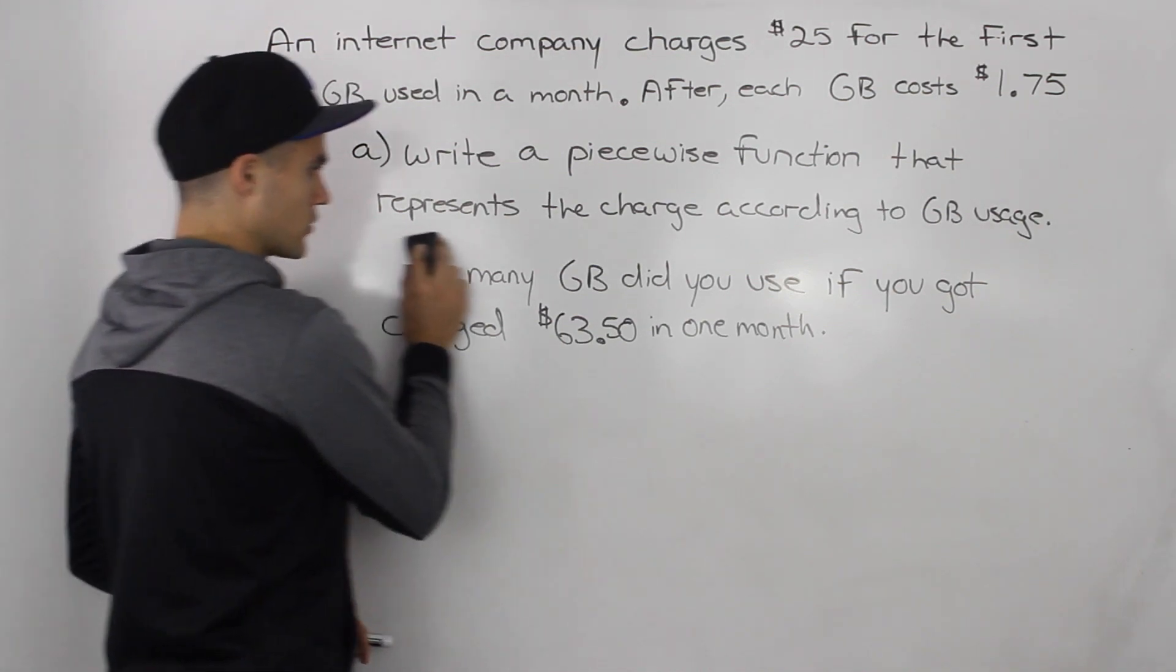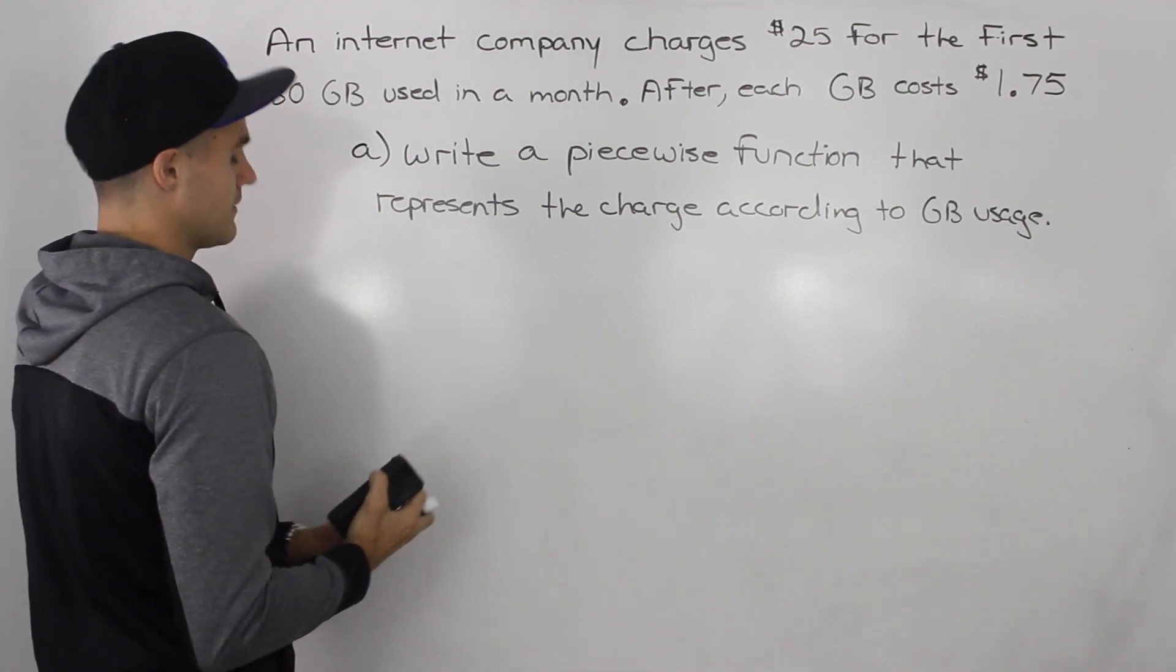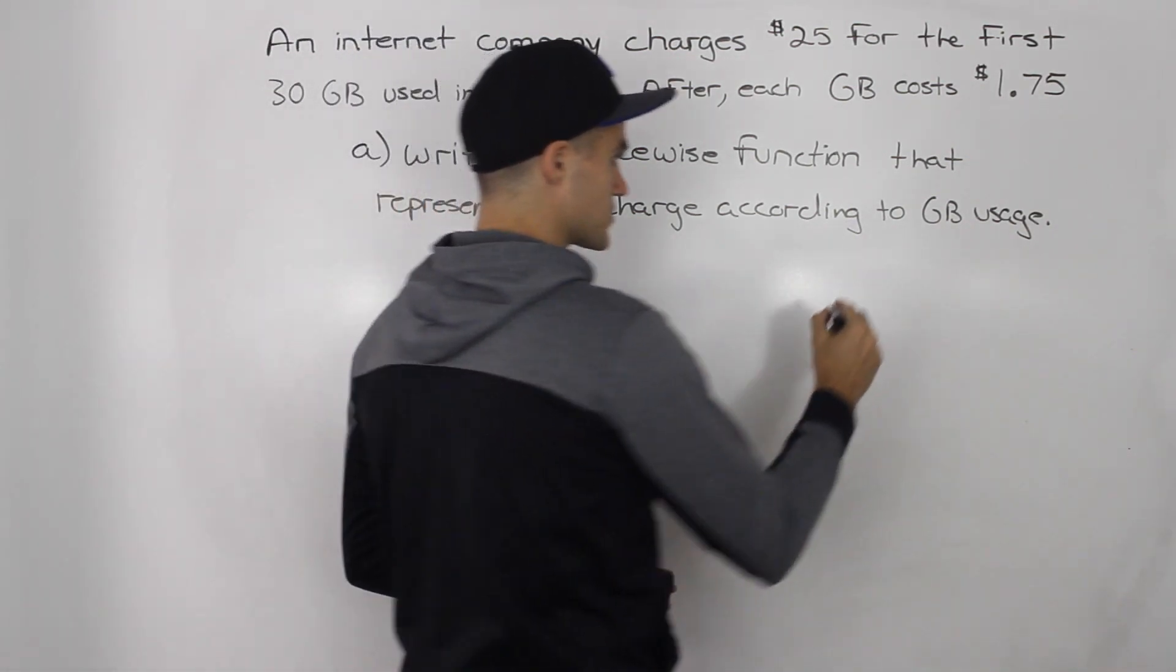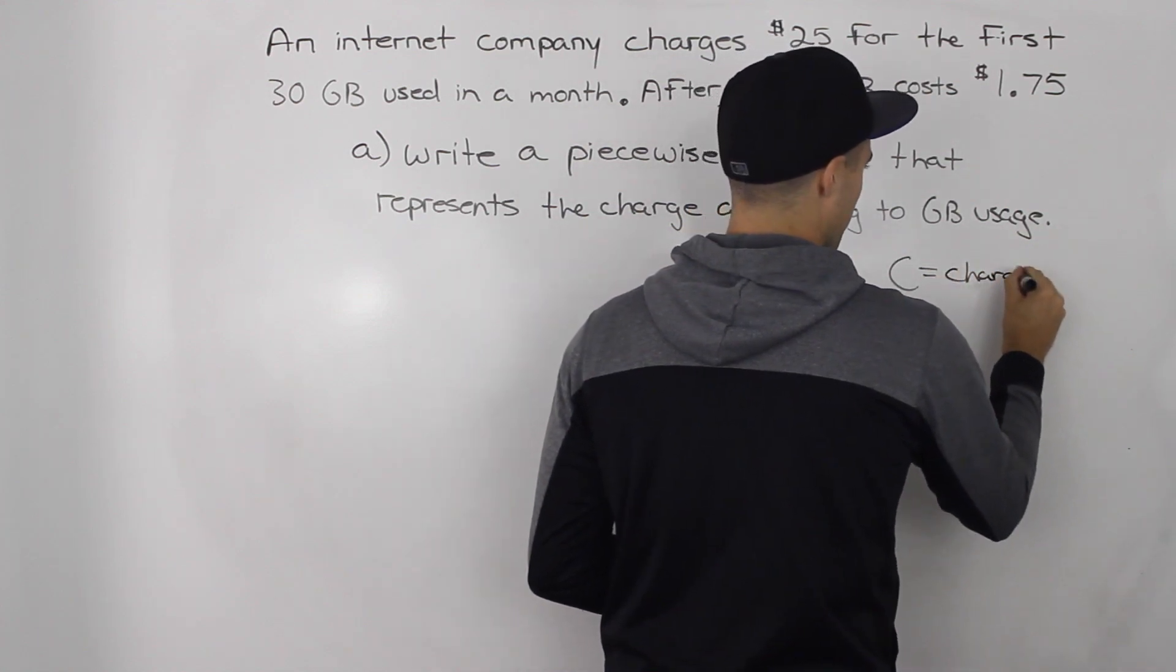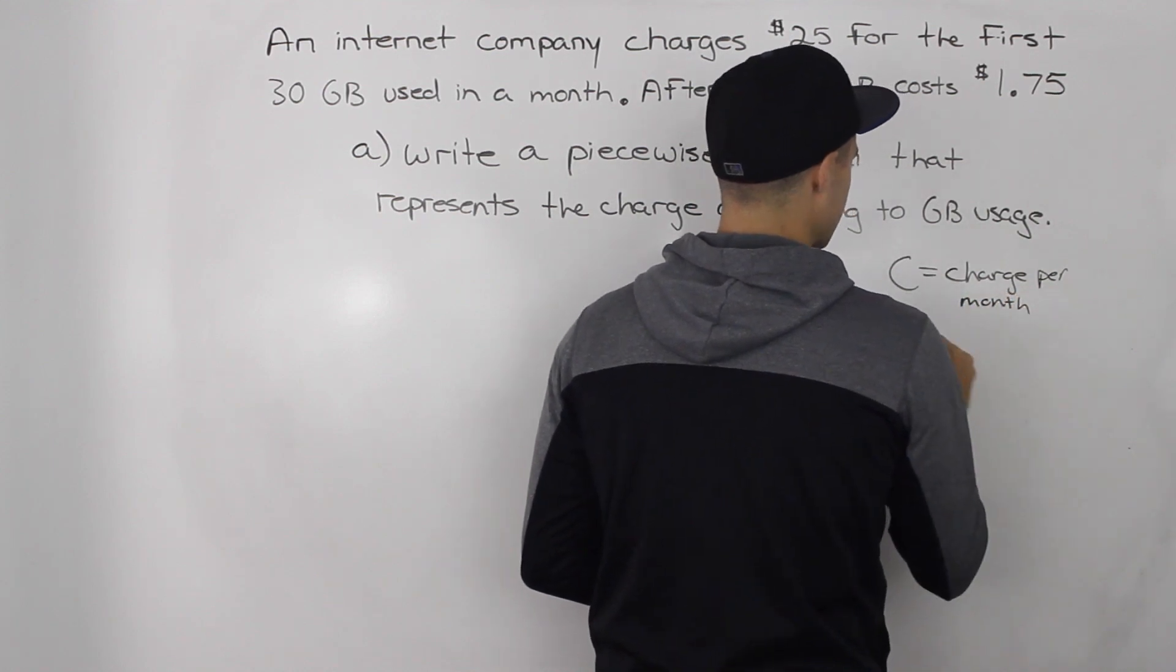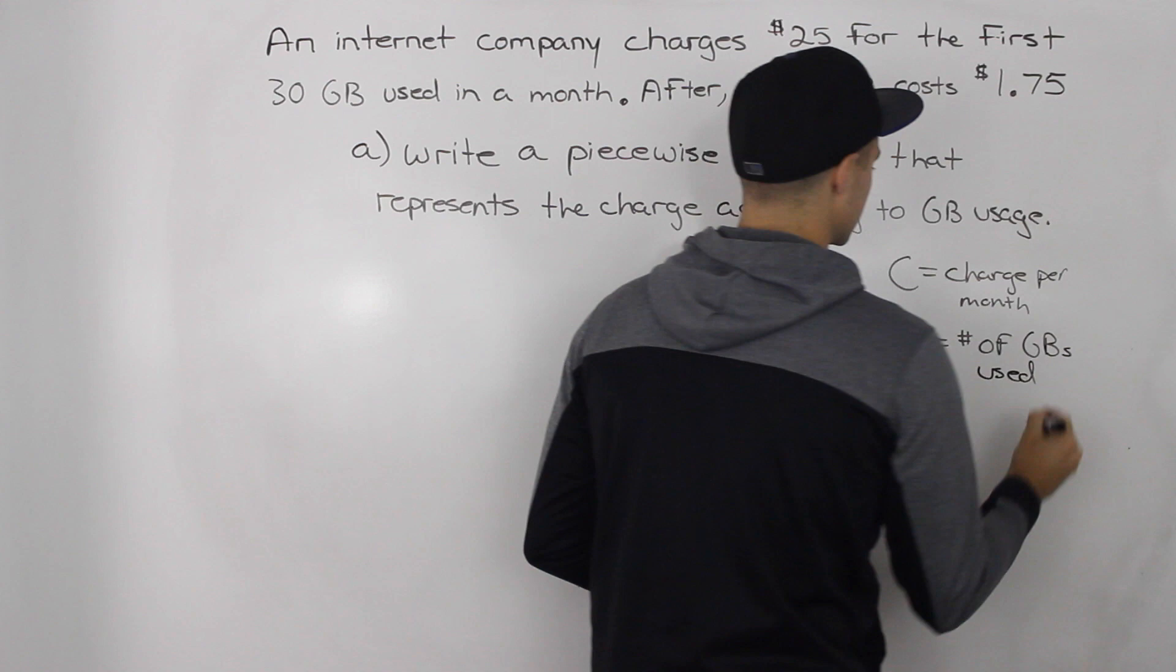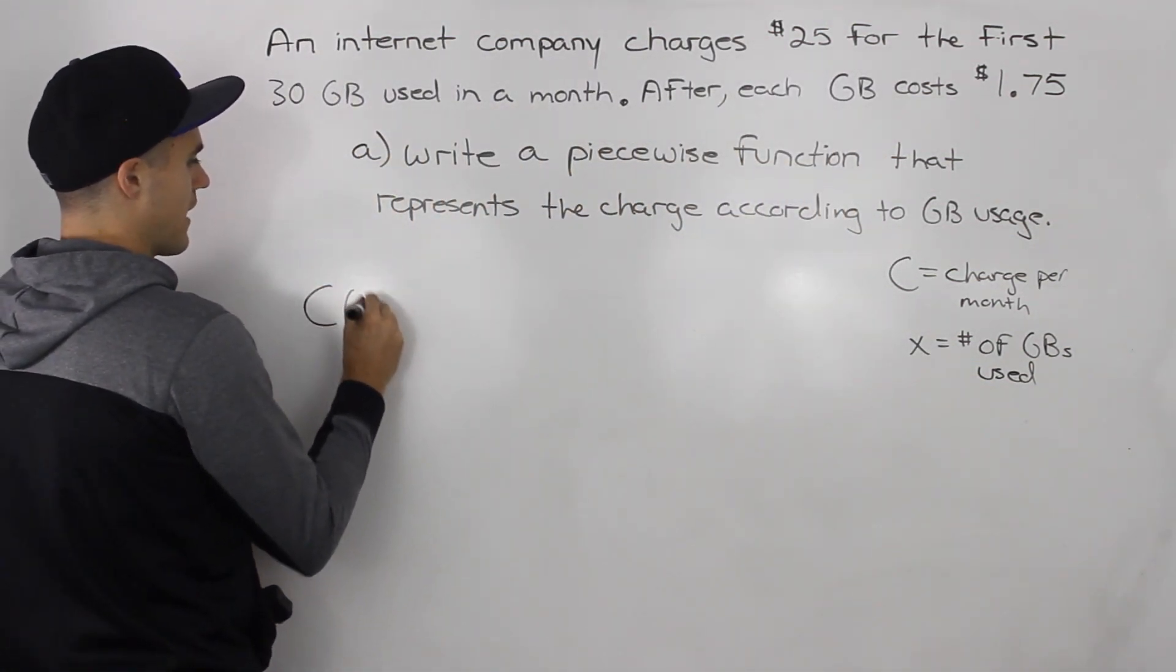Okay, so for now I'm going to erase part B. We'll come back to that. So let's model this situation with a piecewise function. Let's introduce some variables here. Let C equal the charge per month and then let X equal the number of gigabytes used. So we're going to have some kind of function C of X.